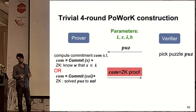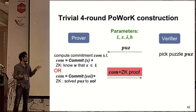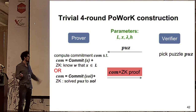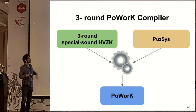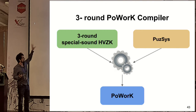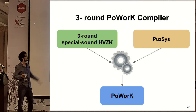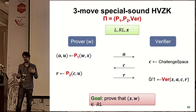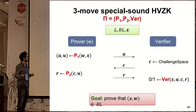To give intuition, there is a trivial four-round construction: the verifier sends a puzzle, and the prover either commits and provides a zero-knowledge proof of knowledge of the witness, or commits to a solution and provides a zero-knowledge proof of a valid solution. It is much more interesting to do it in three rounds. We actually have a compiler that takes a three-round special-sound HVZK protocol and a fixed puzzle system and produces a three-round PoWoK.